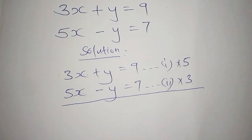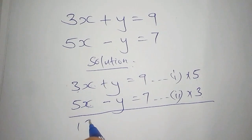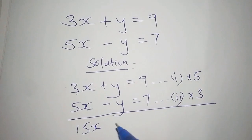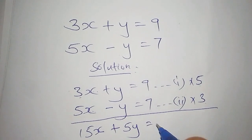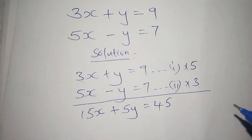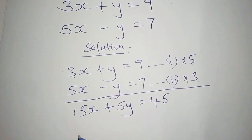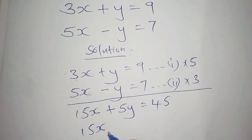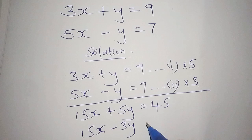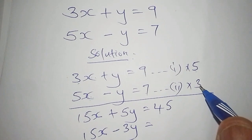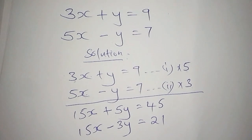So here we shall have 5 multiplied by 3x, giving us 15x. Then 5 multiplied by y gives us plus 5y, and 5 multiplied by 9 gives us 45. For the second equation, 3 multiplied by 5x gives us 15x, then 3 multiplied by negative y gives us negative 3y, and 3 multiplied by 7 gives us 21.